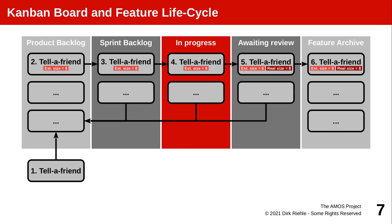As you see how a feature was moved into awaiting review and then moved into the feature archive, you can see how it gets a real size. Previously it only had an estimated size, and now once it was done, it also gets a real size. The estimated size is created before the feature's implementation is started, and the real size is added after it was finished.